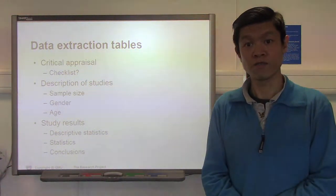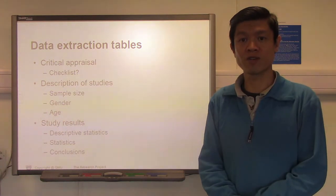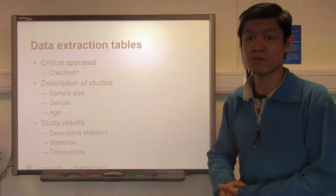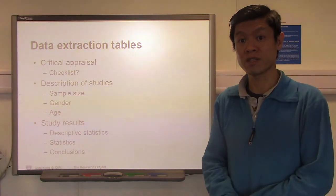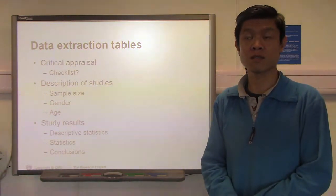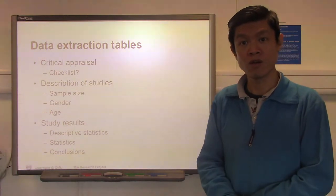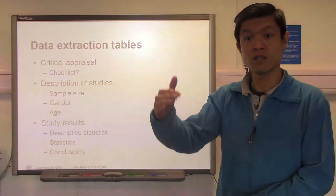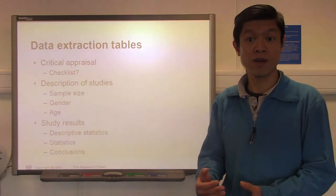Within the data extraction tables, there are some key features you probably need to fill in as you extract data from individual studies. Some key information to collect includes the demographics of the population within the study, what results have been gained from the study itself, a succinct result statement of what they found, and the author's conclusion of what the results mean. As you collect those, you will have a data extraction table of all the studies collected, and you can then compare and contrast them in order to move on to the next step of your systematic review.